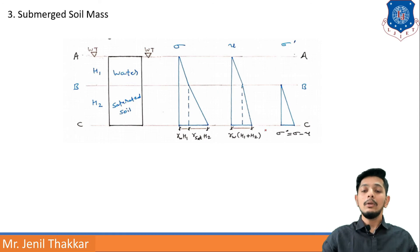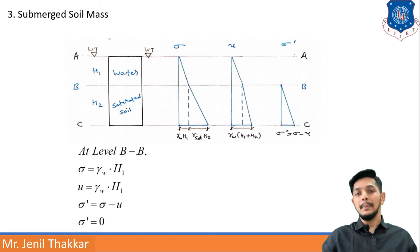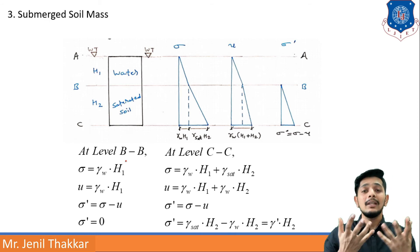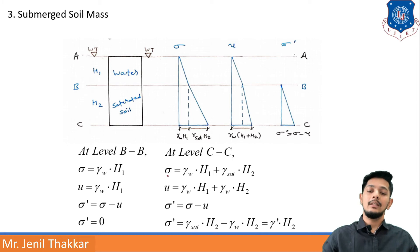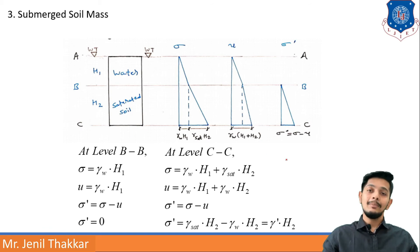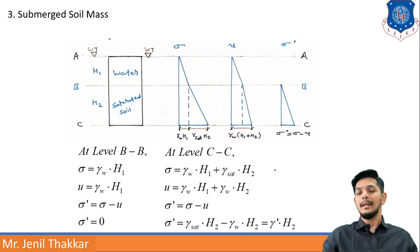At level BB: sigma = gamma_W × H1, U = gamma_W × H1, so deducting gives sigma' = 0. Effective pressure is zero because the pressure was only due to water. At level CC: sigma = gamma_W × H1 + gamma_saturated × H2, U = gamma_W × H1 + gamma_W × H2. Deducting U from total stress gives sigma' = gamma_saturated × H2 - gamma_W × H2, which equals gamma' × H2, where gamma' is the submerged unit weight.